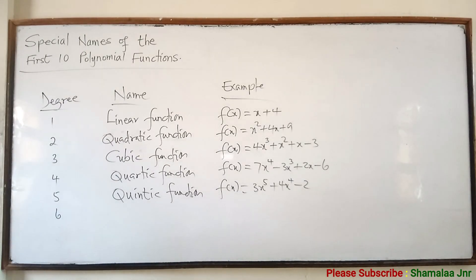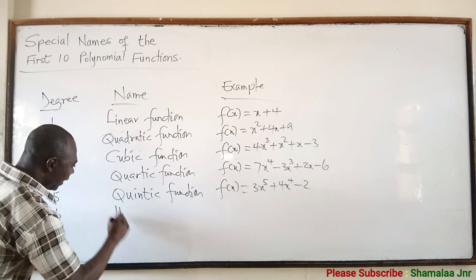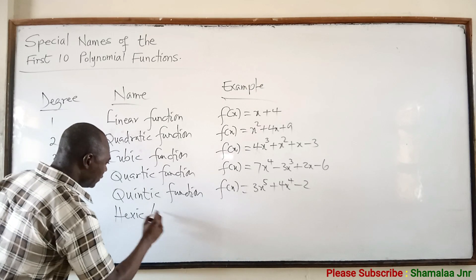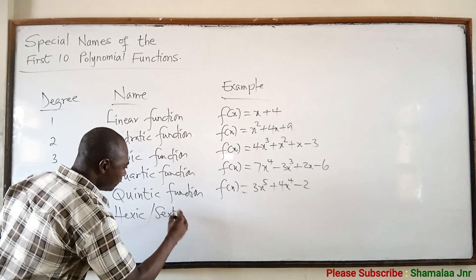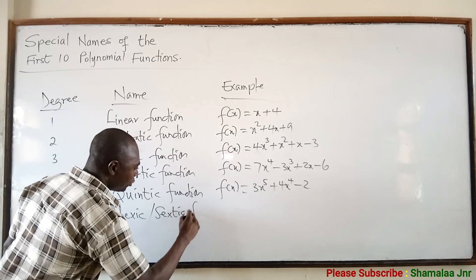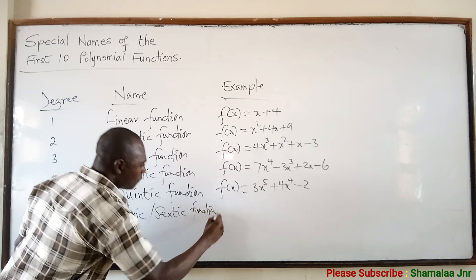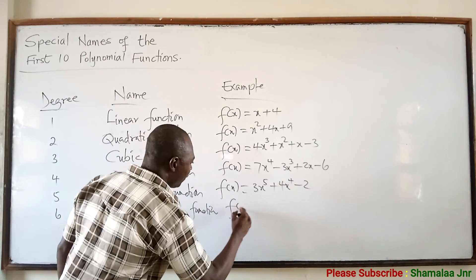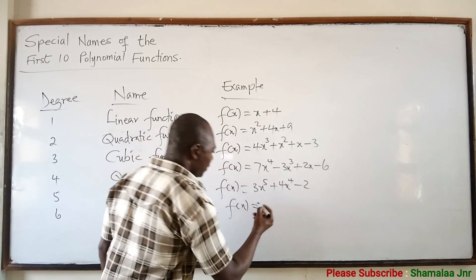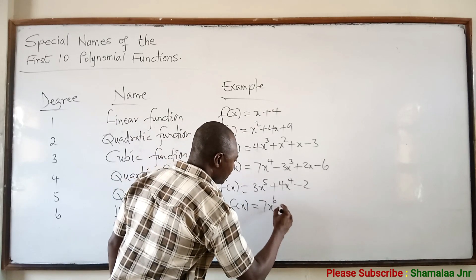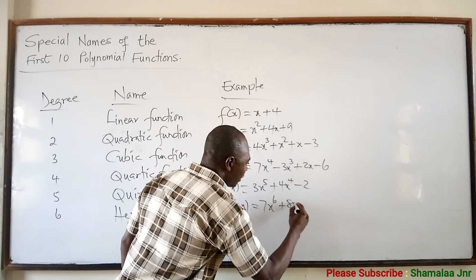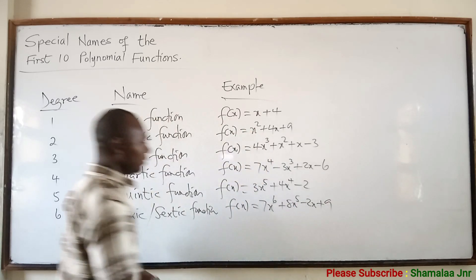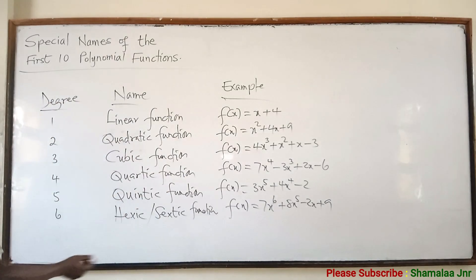Now when the degree is 6, then we say that it is a sextic or sestic function. For example, L(x) = 7x⁶ + 8x⁵ − 2x + 9. You can give as many examples as you want.